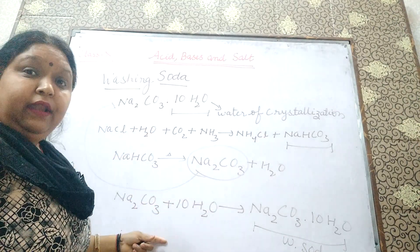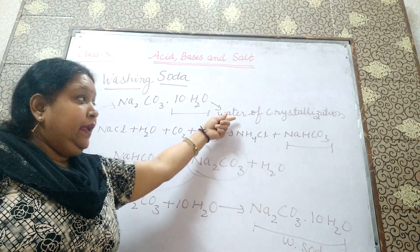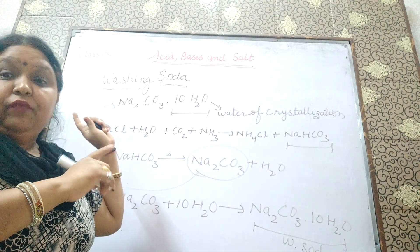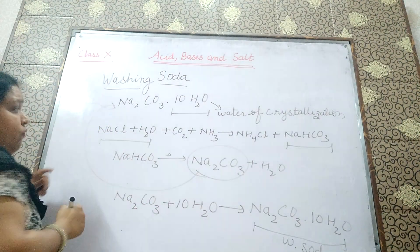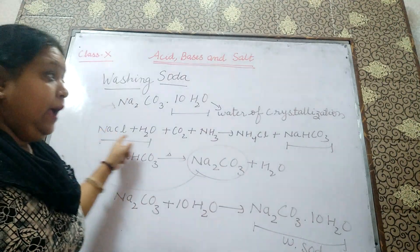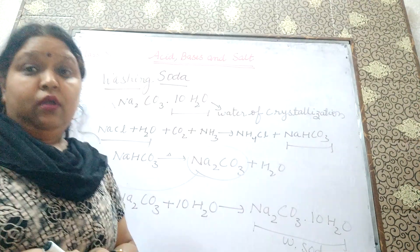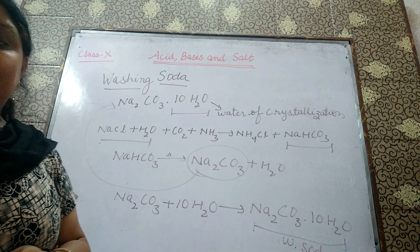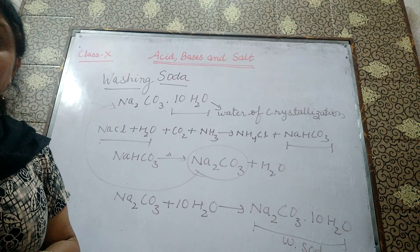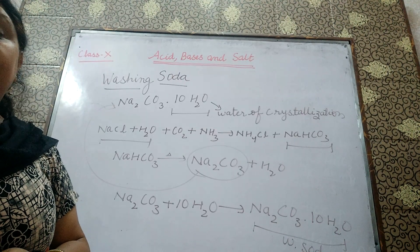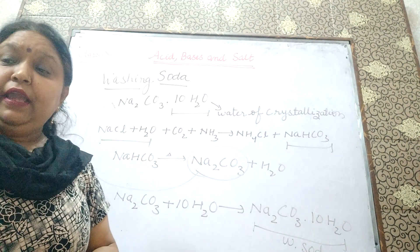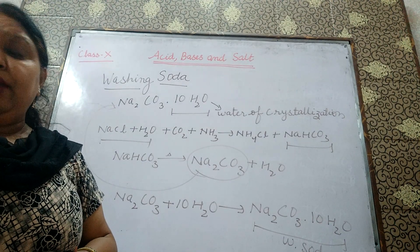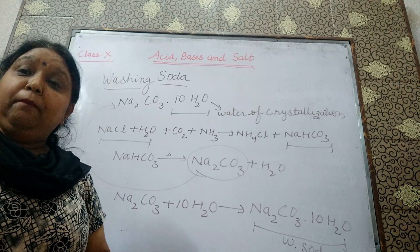The whole process: washing soda is prepared from baking soda, and baking soda is prepared from NaCl, taken as a raw material. Now the uses of washing soda: first, they are used in making glass, soap and in paper industries. For making soap and detergent, we are using washing soda. Then it is used for making another sodium compound like borax — borax is a compound which is made by adding washing soda.